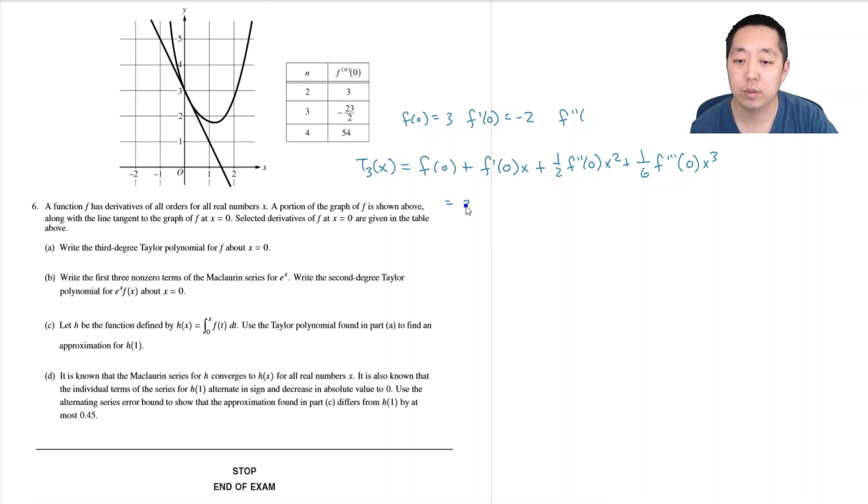So this is going to be 3 minus 2x plus one half times 3 is three halves x squared, and one-sixth times f'''(0) that's minus 23, so minus 23 over 12 x cubed. Let me double check I made all the correct values: negative two, one half of this is three halves, and then one-sixth of that, okay good.